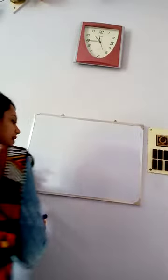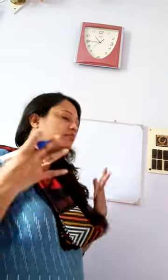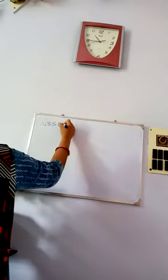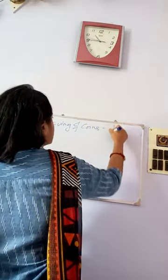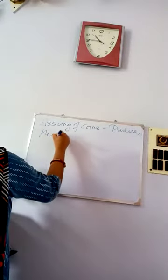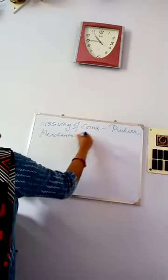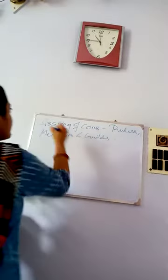Coins could not be issued by just anybody. Similar to our modern banking system where currency comes from the reserve bank and circulates through other banks, there was a mint from where coins and currency were made. At that time, the issuing of coins was basically in the hands of the rulers and merchants, who had the authority to issue coins.